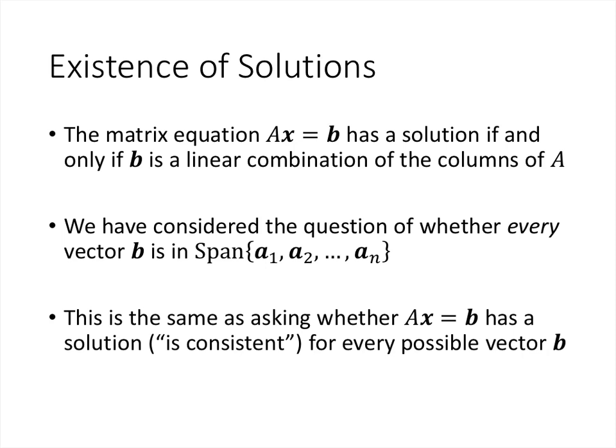We're interested in the solutions of this matrix equation. The matrix equation Ax = b will have a solution if and only if b is a linear combination of the columns of A, because Ax means a linear combination of the columns of A. So when we look at Ax = b where x is the variable, we're asking: is there a way to construct a linear combination of the columns of A such that the result turns out to be b?